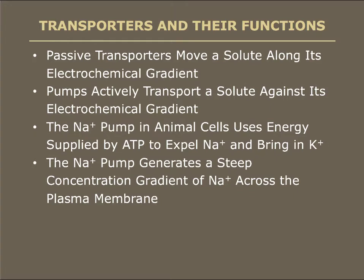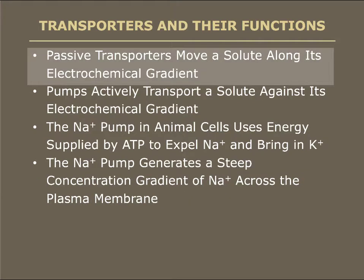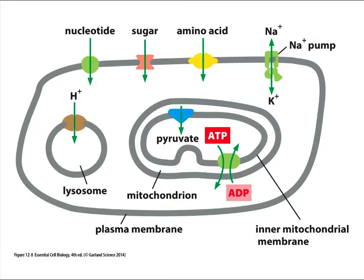Part B of this chapter focuses on protein transporters and their functions, with eight learning objectives. The first is that passive transporters move a solute along its concentration gradient and electrical gradient — the two together are known as the electrochemical gradient for that particular solute. It is very important to keep in mind that every substance has an electrochemical gradient. For material with no electrical charge that is electrically neutral, the electrical component is zero, and only the chemical gradient matters. Substances like protons have both a charge and a concentration and must be governed by the full electrochemical force.